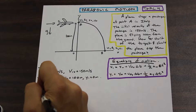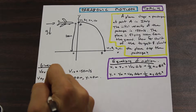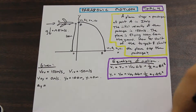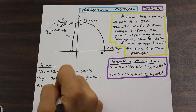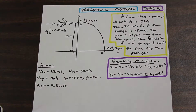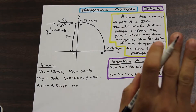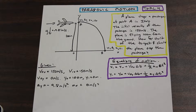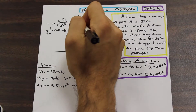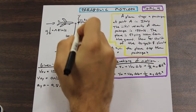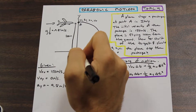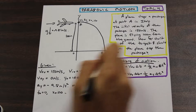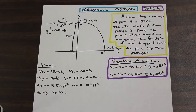Our acceleration in the y direction equals gravity, which is negative 9.81 meters per second squared — we'll use negative 9.8. Acceleration in the x direction is always zero because velocity is constant. We're starting from our point of origin, so X-naught equals zero and T-naught equals zero. At X1 there will be some distance, which is what we're solving for.